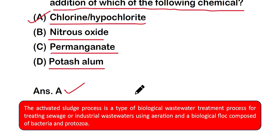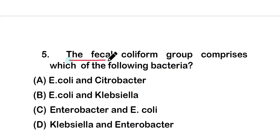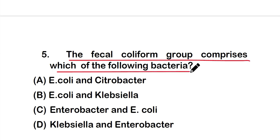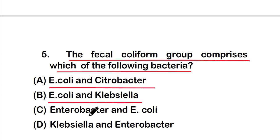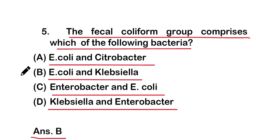Question five: the fecal coliform group comprises which of the following bacteria? Options: option A - E. coli and Citrobacter, option B - E. coli and Klebsiella, option C - Enterobacter and E. coli, option D - Klebsiella and Enterobacter. The right answer is option B — the fecal coliform group comprises E. coli and Klebsiella.